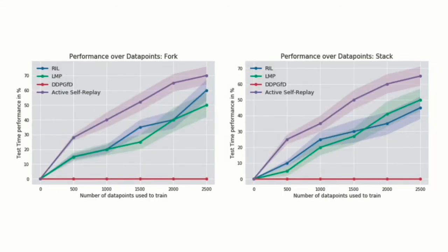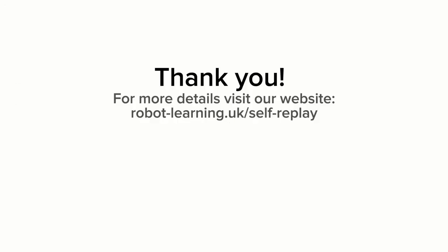Our method is also more sample-efficient thanks to the Coarse-to-Fine decomposition, that allows the robot to focus on learning how to reach the bottleneck pose instead of trying to learn the full task. In this plot, we see how the performance of each method evolves as a function of the dataset size, gathered either as demonstrations, self-replay, or reinforcement learning exploration. Thank you! For more details, visit our website.